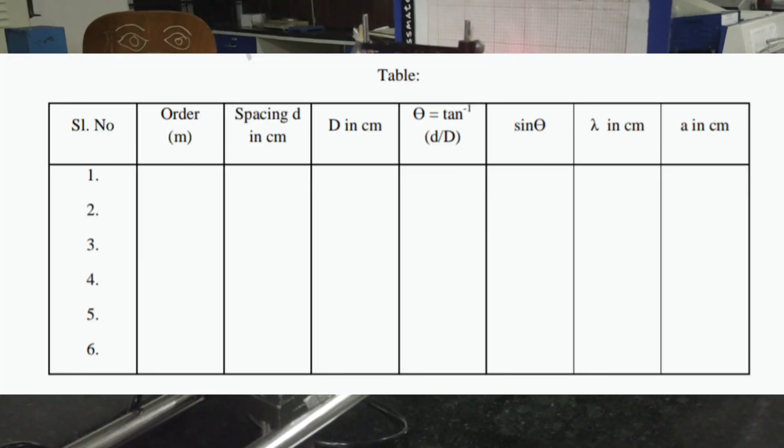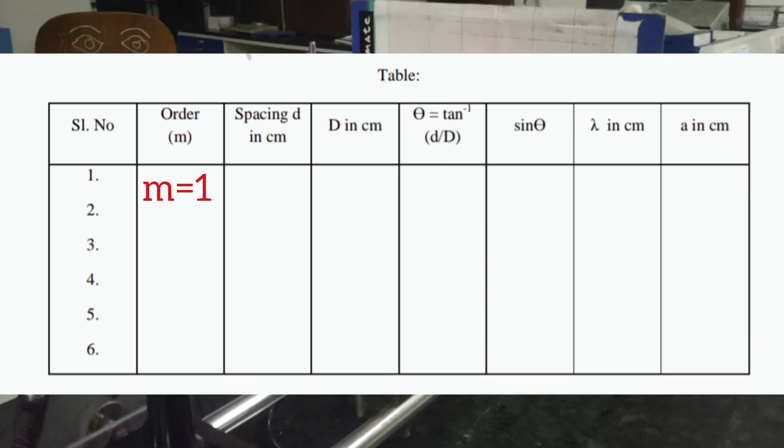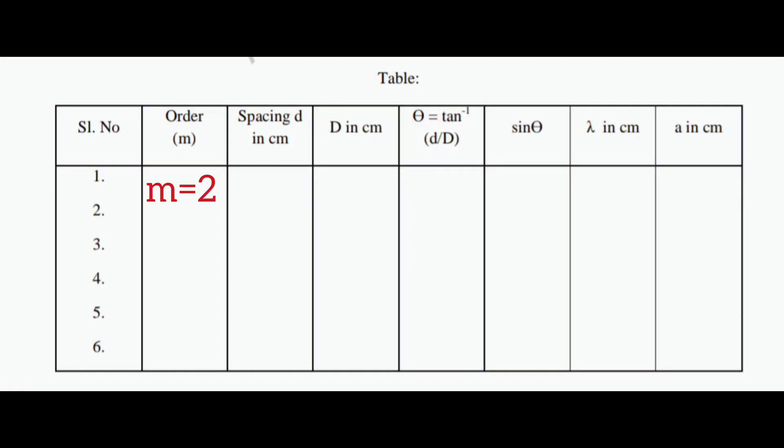We do this experiment first for the first order diffraction pattern and later we repeat the experiment for the second order diffraction pattern. As you can see from the table we can calculate the value of θ. Now we can use the formula that was provided.